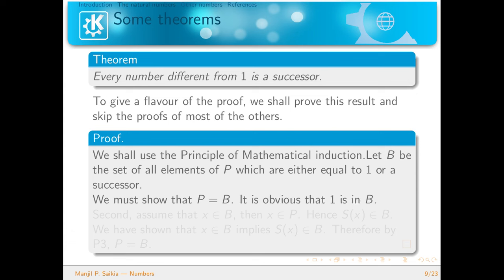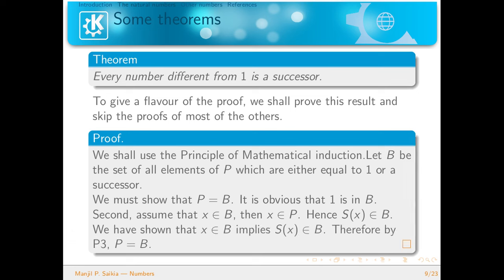It is obvious that 1 is in B, since we defined B to contain 1 or the successors. We assume there is an element x in B. B is non-empty because 1 is already in B. Then x will be in P because B is a subset of P, and hence S(x) will be in B because B contains all elements which have a successor. So we have shown that x in B implies S(x) is in B. Therefore, by the third axiom — the principle of mathematical induction — P equals B, and every number different from 1 is a successor.